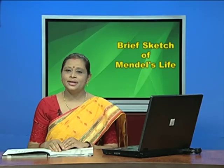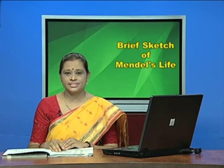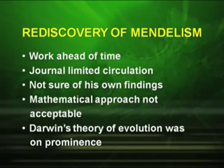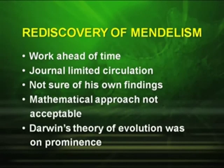Unfortunately, he was not appreciated by his contemporary biologists. The reasons were: his work was ahead of its time, the journals had limited circulation at that time, he was not sure of his own findings, and a very important thing — the mathematical approach was not acceptable to biologists then. Darwin's theory of evolution was also at prominence.